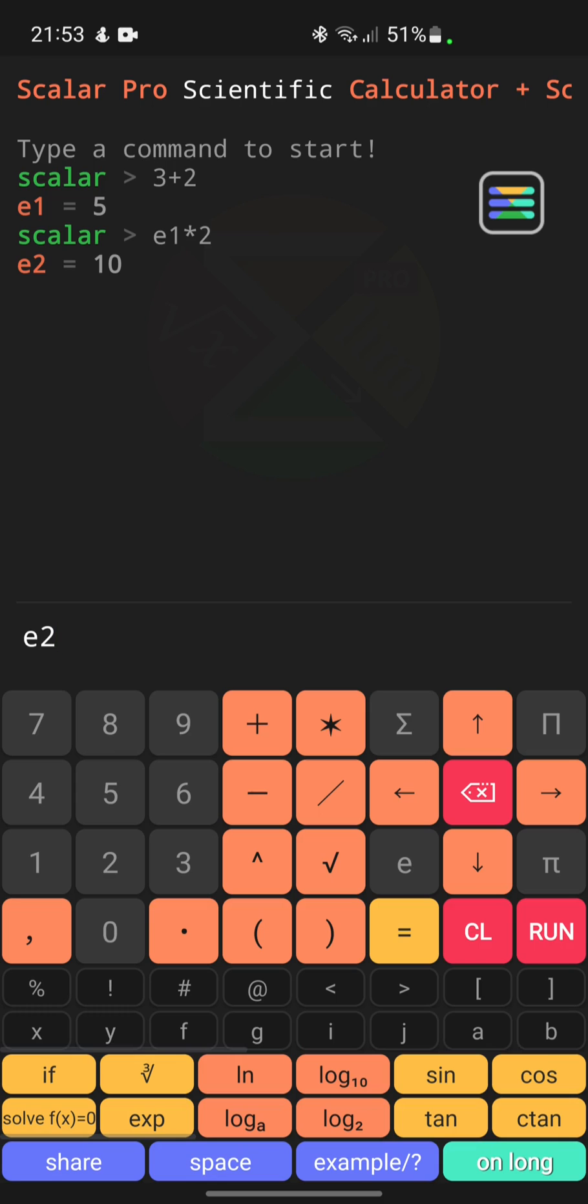In the next step let's raise E2 to the power of E1, which is equivalent to raising 10 to the 5th power. As a result, of course, we got 100,000.